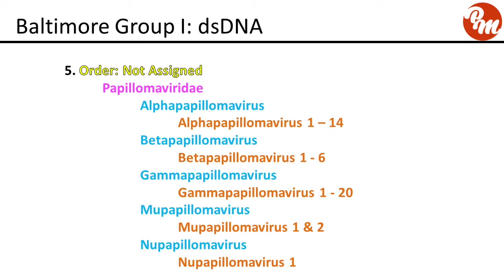Next group, order not assigned, family Papillomaviridae. Genus alpha papillomavirus has species alpha papillomavirus 1 through 14. There are also genus beta papillomavirus, gamma papillomavirus, mu papillomavirus, and nu papillomavirus.